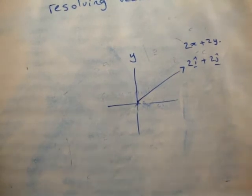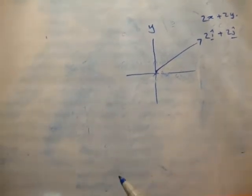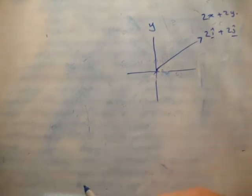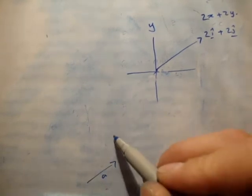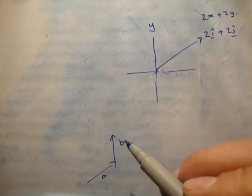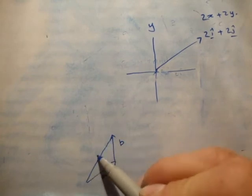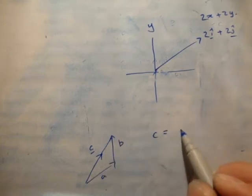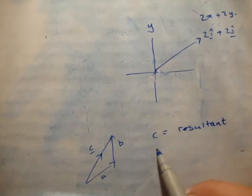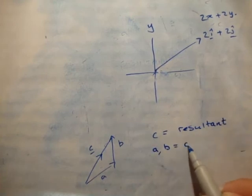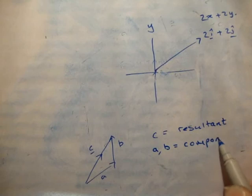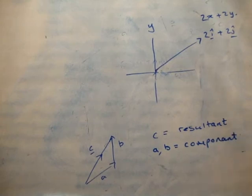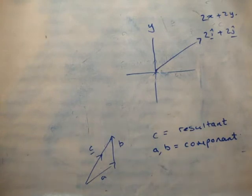You want to find its components. Remember when we added two vectors — say A and B — and got the resultant vector C? Well, C is the resultant, while A and B are the component vectors. They're the ingredients of vector C.